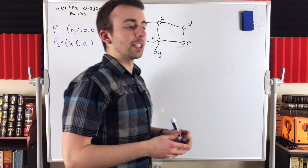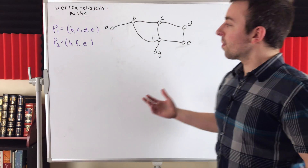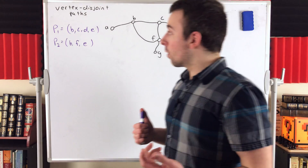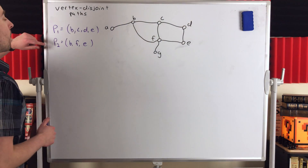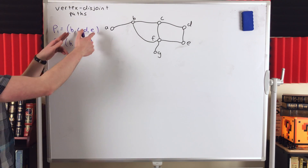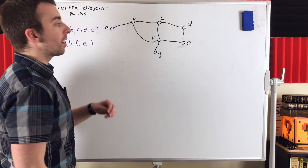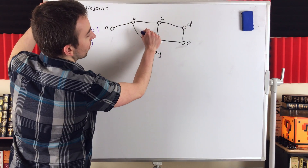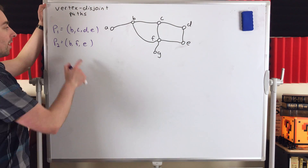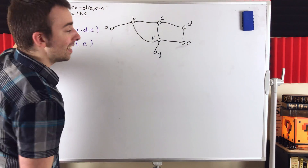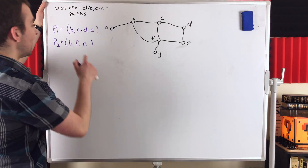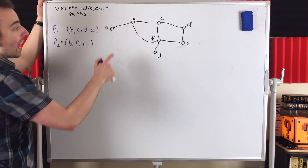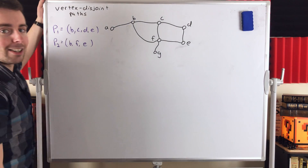So what is significant about internally disjoint paths? One important thing: since we've got two internally disjoint B-E paths here, we could delete any internal vertex from either one of these paths and B and E would still be connected in the graph by the other path. For example, we could delete the vertex F, and B and E would still be connected by P1. Or, we could delete C and D from P1, and B and E would still be connected by P2.